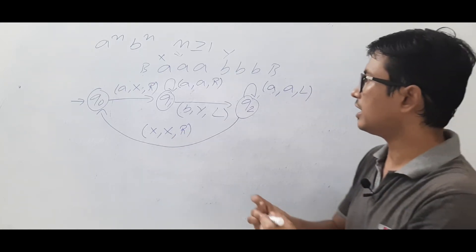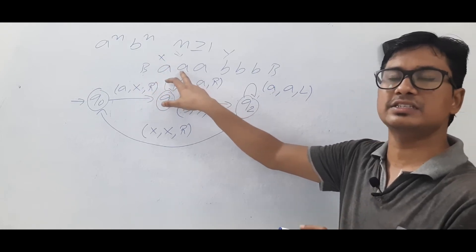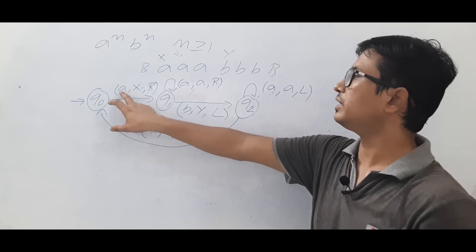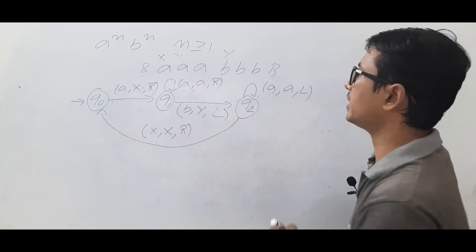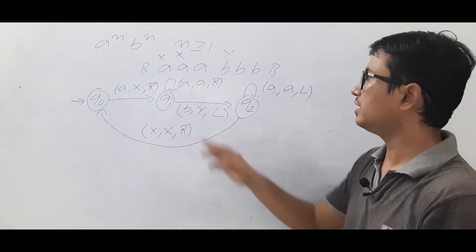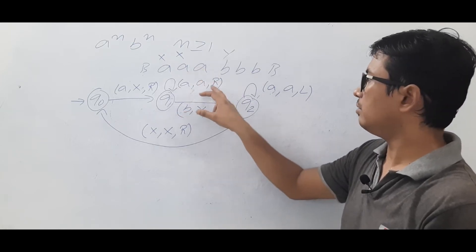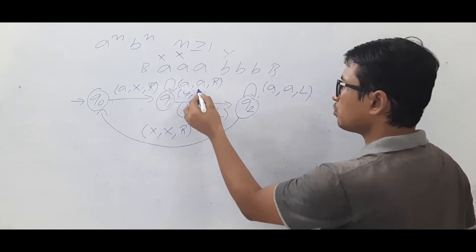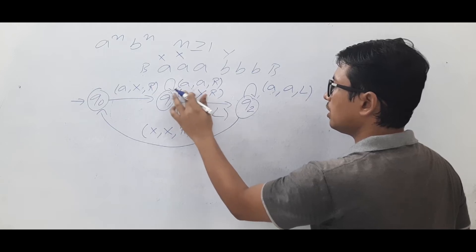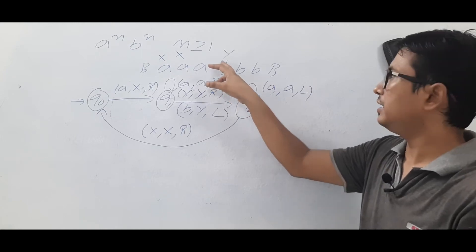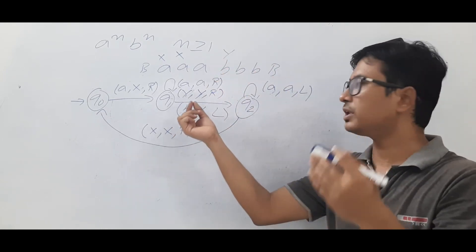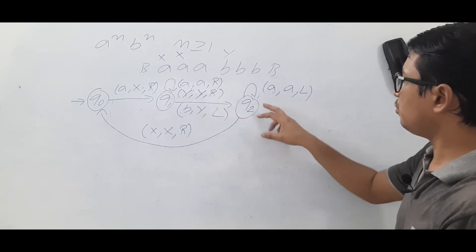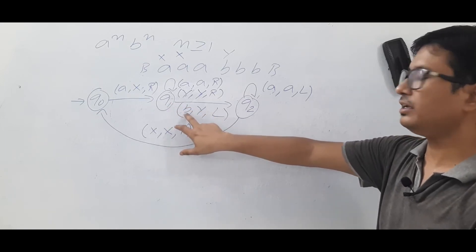When we see X, we keep it as X and move right. Then seeing A, we mark it as X and move right. If we encounter a Y, we keep it as Y and move right, continuing until we find a B. This loop repeats — marking each A as X and each corresponding B as Y.